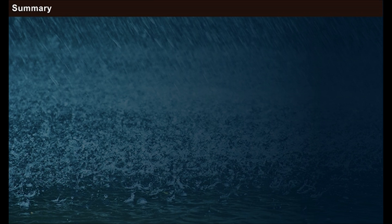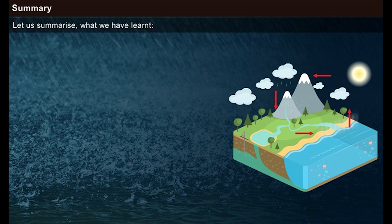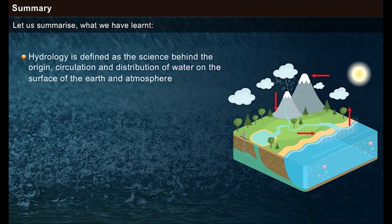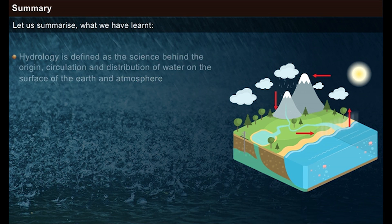Summary. Let us summarize what we have learnt. Hydrology is defined as the science behind the origin, circulation and distribution of water on the surface of the earth and atmosphere.